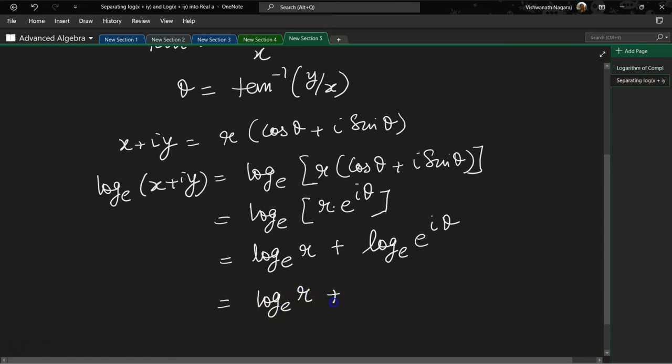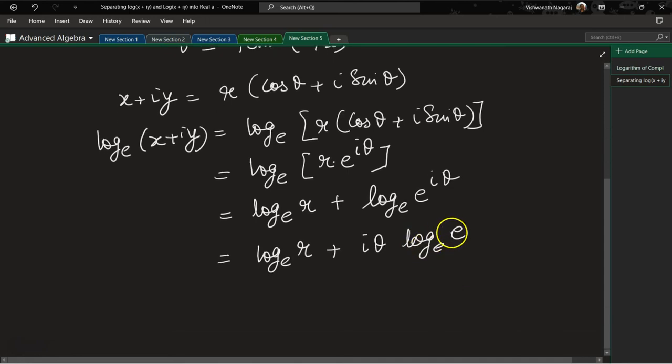And this log and e will cancel out, so that will become 1. So therefore we have log_e(r) + iθ.